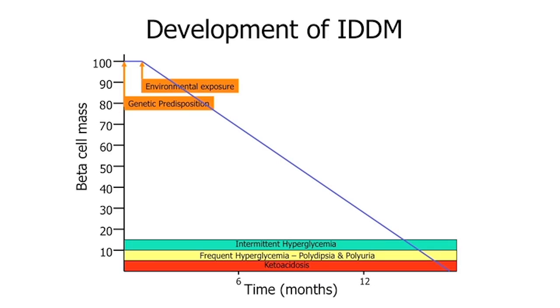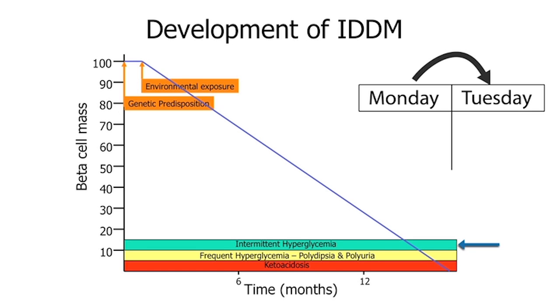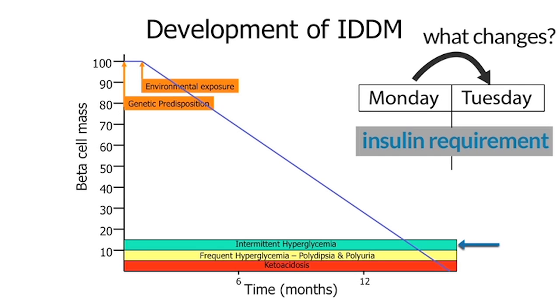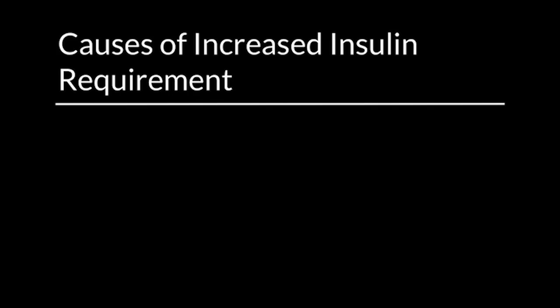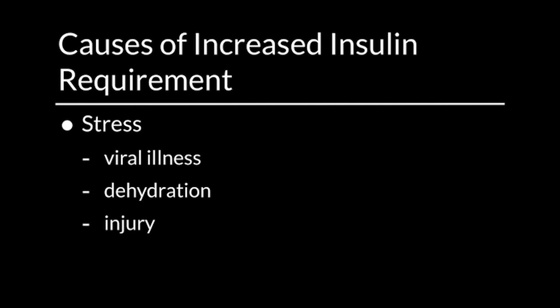If you look at the patient in the green zone going from Monday to Tuesday, what changes is not their beta cell mass — what changes is their insulin requirement. What was enough insulin on Monday to keep them under control is suddenly on Tuesday not nearly enough, and it throws them right into ketoacidosis. What could have happened between Monday and Tuesday? Stress is a very straightforward answer. In childhood, it can be virtually any kind of stress: a viral illness, dehydration, an injury, a fever.